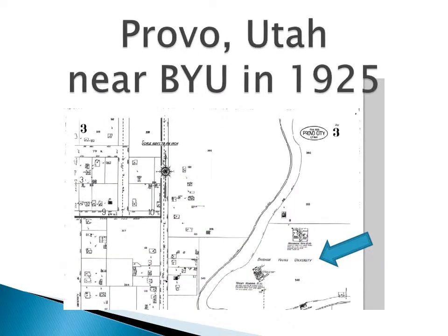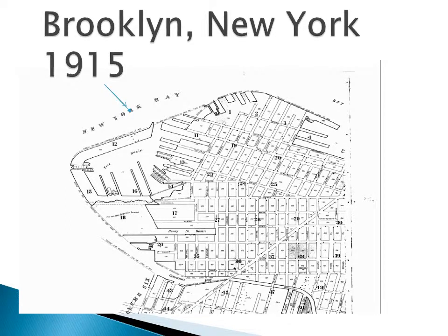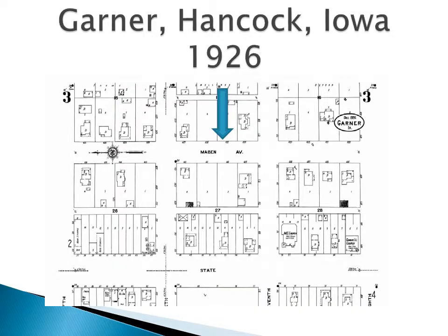This is a map of Provo, Utah, near Brigham Young University in 1925. This is a map of a section of Brooklyn, New York, in 1915, near New York Bay. This is a map section of the small town of Garner, in Hancock County, Iowa, showing Maben Avenue in 1926.